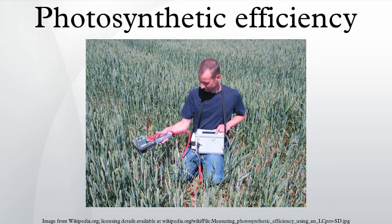However, photosynthesis can occur with light up to wavelength 720 nanometers, so long as there is also light at wavelengths below 680 nanometers to keep photosystem 2 operating. Using longer wavelengths means less light energy is needed for the same number of photons and therefore for the same amount of photosynthesis. For actual sunlight, where only 45% of the light is in the photosynthetically active wavelength range, the theoretical maximum efficiency of solar energy conversion is approximately 11%.